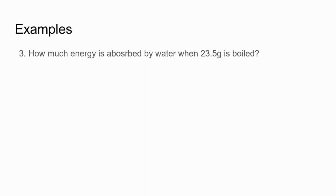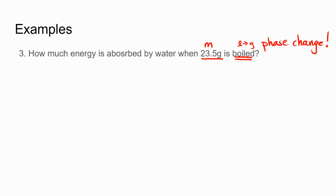Here we're looking at how much energy is absorbed by 23 grams of water when it boils. Remember, boiling means going from a liquid to a gas — that is a phase change. During a phase change temperature is held constant, so we don't use Q = MCpΔT. We use one of our phase change formulas: liquid to gas is vaporization, so we use Q = MHv.